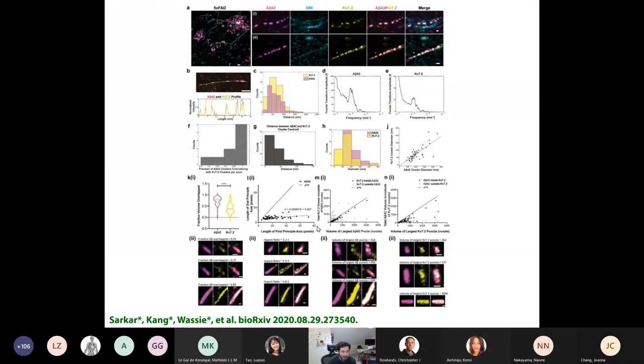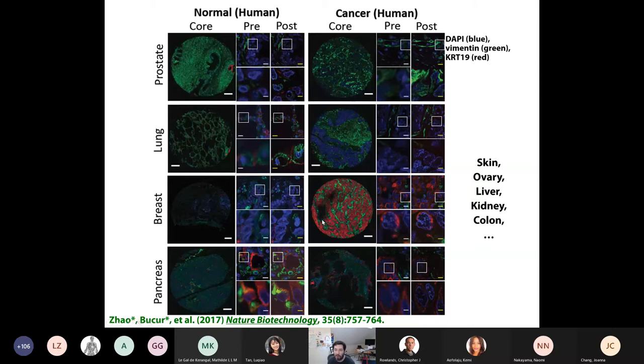Now, everything I've shown you so far is about the brain, but we've also shown this to work in a wide variety of tissues, including human biopsies from patients. When Yongxin Zhao and Octavia Bikura worked with my group and Andy Beck's group, we showed that we could look at human prostate, lung, breast, pancreas, all sorts of different tissue types. Normal here is on the left, cancer containing on the right, the color code is in the upper right. But suffice it to say that we could look at a lot of different tissues, even from human patients, and look at interesting patterns that were only visible after we had nanoscale and molecular visualization capability.